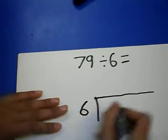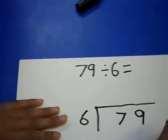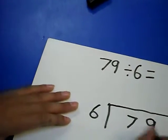Now you put 6 here and 79 over here. That's how you do it.